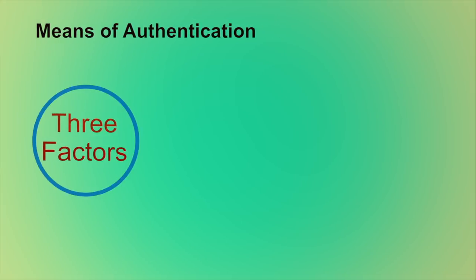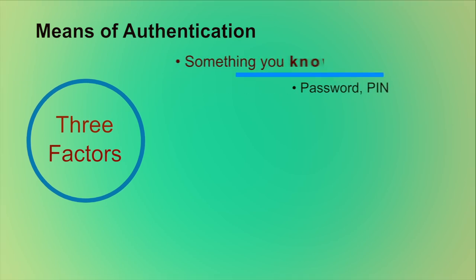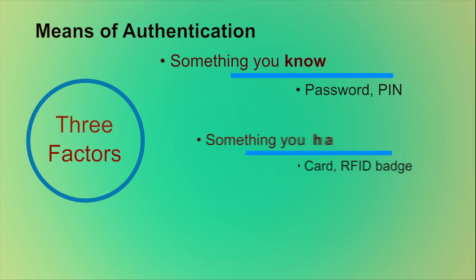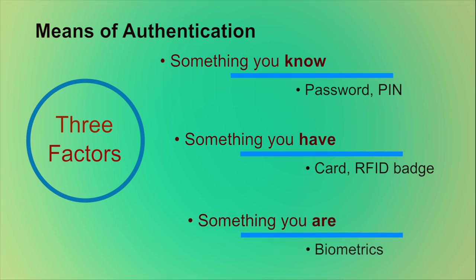Traditionally, there are three means of authentication. First, something you know — like a password or PIN. Second, something you have — like an ID card or RFID badge. And last, something you are — like biometrics. All of these methods, if properly implemented and used, can provide secure user authentication.